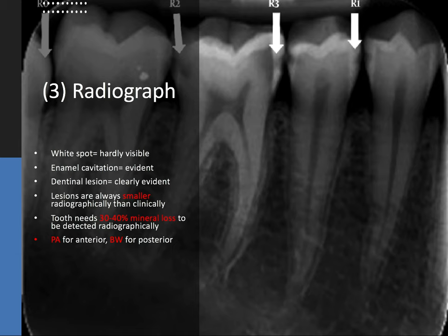Interestingly, lesions are always smaller radiographically than clinically, because the tooth needs 30 to 40 percent mineral loss before it's detectable on a radiograph. So if you're only at 10 percent mineral loss, it won't even show up on the x-ray — the x-ray lags behind reality just a little bit, and that's an important concept to know for the board exam. The PA or periapical x-ray is best for anterior caries detection, whereas the bitewing is best for posterior caries detection, though the bitewing shows the most accurate progression of the caries.